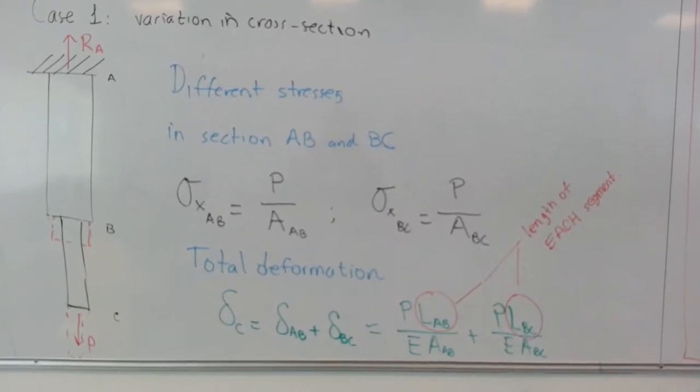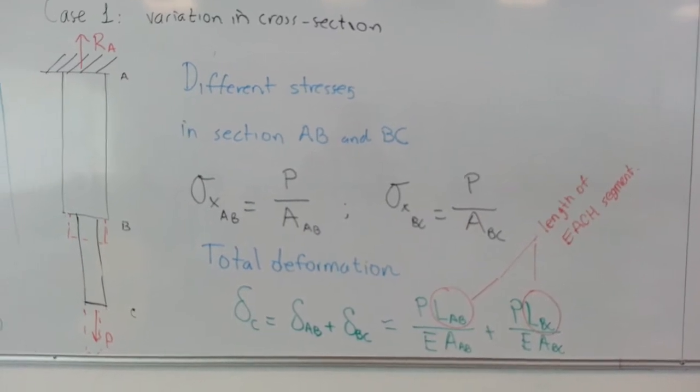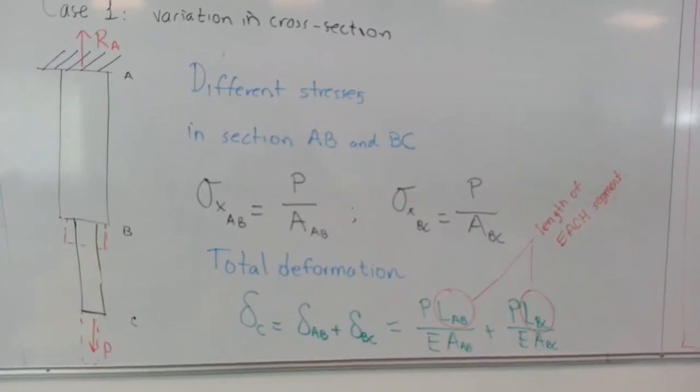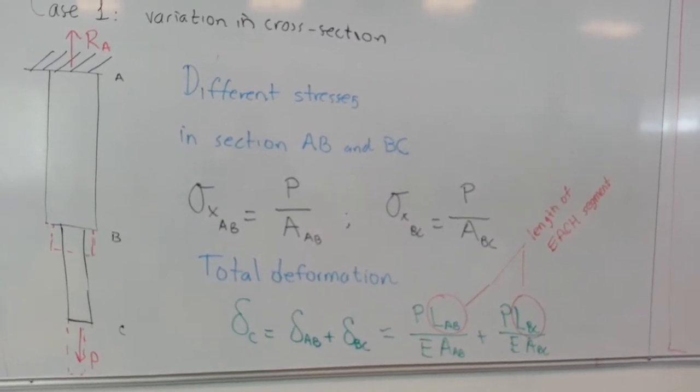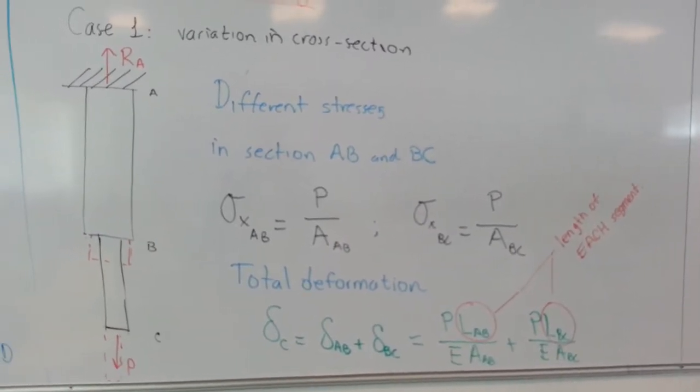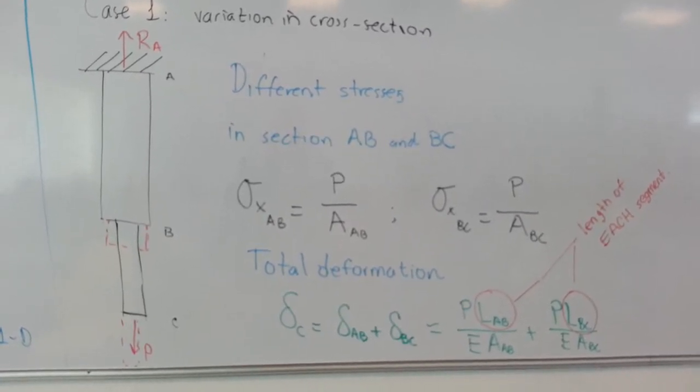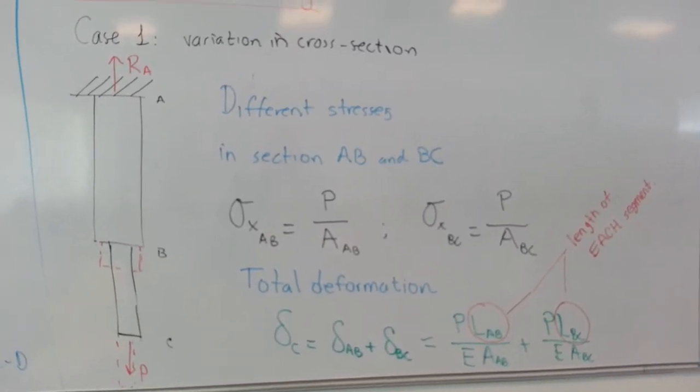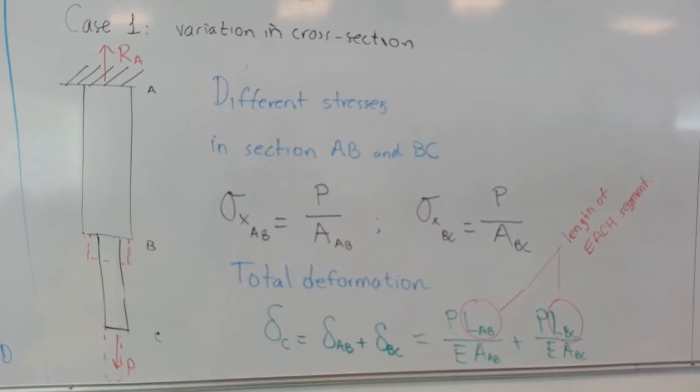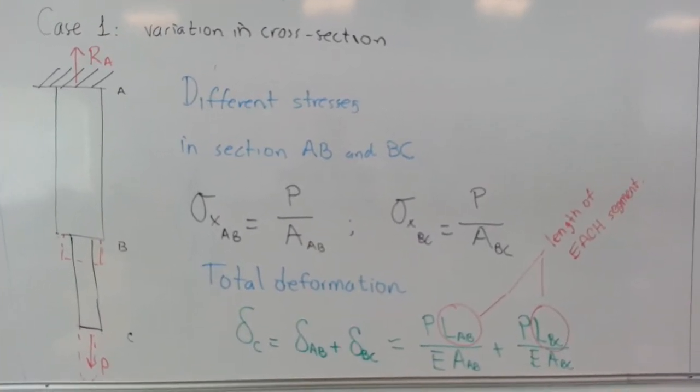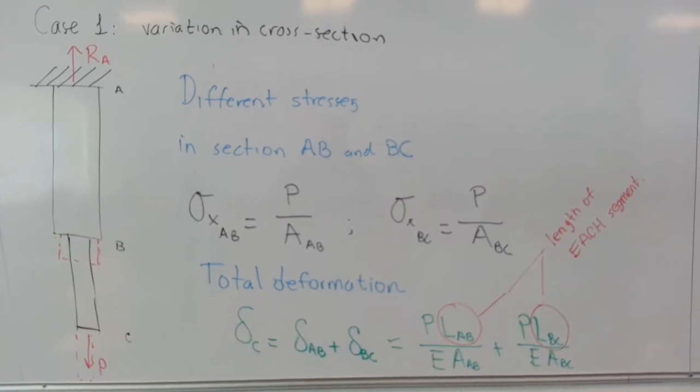And each of these deformations, deltas, will have a different sign. So we have to be careful to include the lengths for each segment and maybe the sign of the force. This is case one, variation in the cross section. We can have as many segments as we want. And the thing is that the stress, the axial stress sigma x, is going to be different due to the change in the cross section.